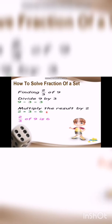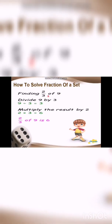Now how to solve fraction of a set with a question. We have the question: two by three of nine. We divide nine by three — we get three. Now we multiply this three by two — we get six. So two by three of nine is six.